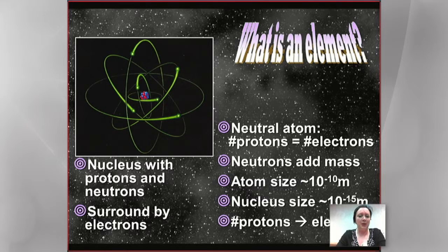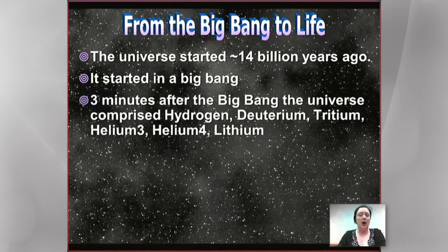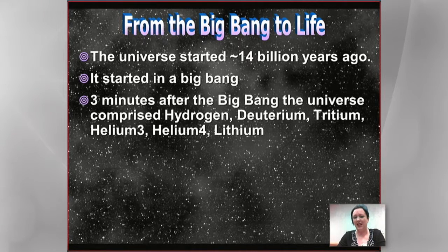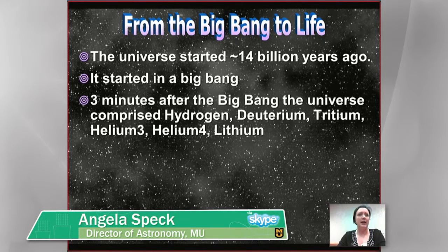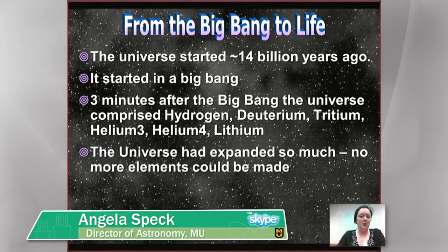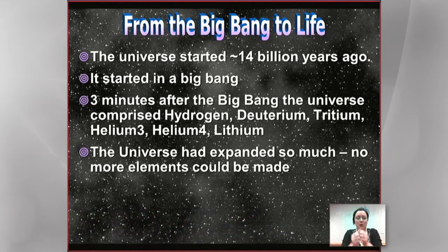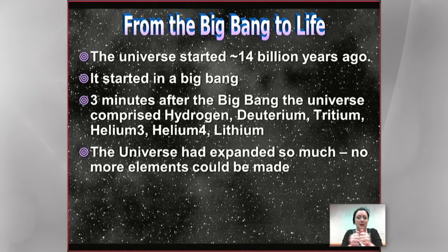Going back to our Big Bang, we've got hydrogen and helium. Hydrogen has one proton, helium has two protons — they can have different numbers of neutrons. Lithium, which we make a little bit of in the Big Bang, has three protons, and so on. But we need to be making more stuff, and the problem is that when you're making this, you've got these protons and you want them to stick together. They don't stick together very well because they have an electric charge, and when you try to push them together, they repel.